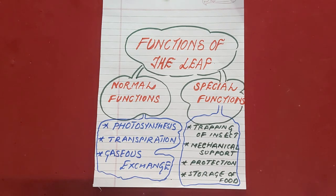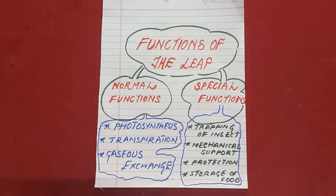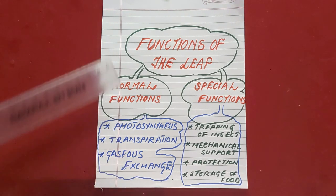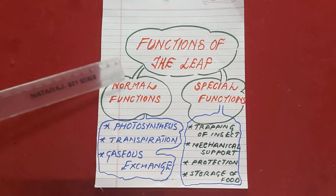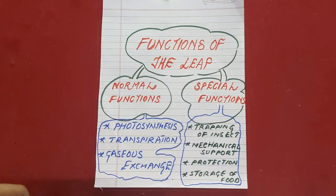In the functions of the leaf, leaves normally perform two types of functions. One is the normal function and the other one is a special function. Normal function means normally all the leaves are performing these functions — all type of leaves perform this function. Special function is one in which the leaves are modified to perform some special function in certain plants, which only certain types of leaves are performing.